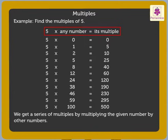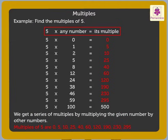Therefore, we get the multiples of 5 as: 0, 5, 10, 25, 40, 60, 120, 190, 230, 295, 500, and so on.